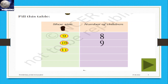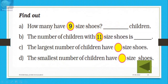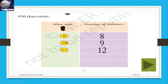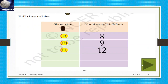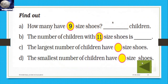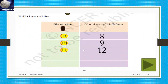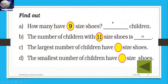Number 10 — how many students are there? Number 11 or 12 students. How many have size nine shoes? Eight number of children. Number of children with size 11 shoes is 12. The largest number of children have size 11 shoes — the largest number is 12, so size 11.